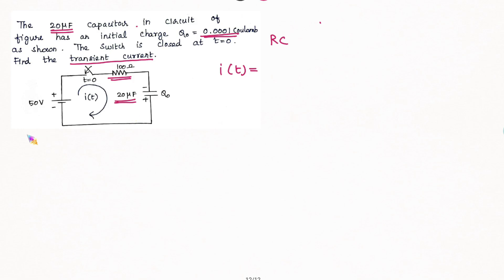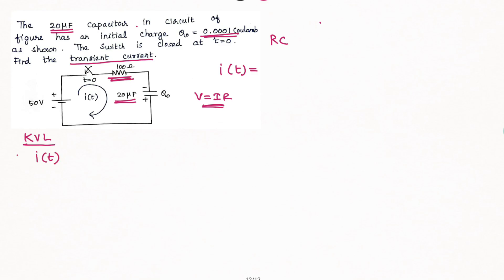The first step is to use the loop equation. We use a 100 ohm resistor. So V is equal to I into R. This is the current I of T, and R is 100. First, we have the voltage across the resistor.